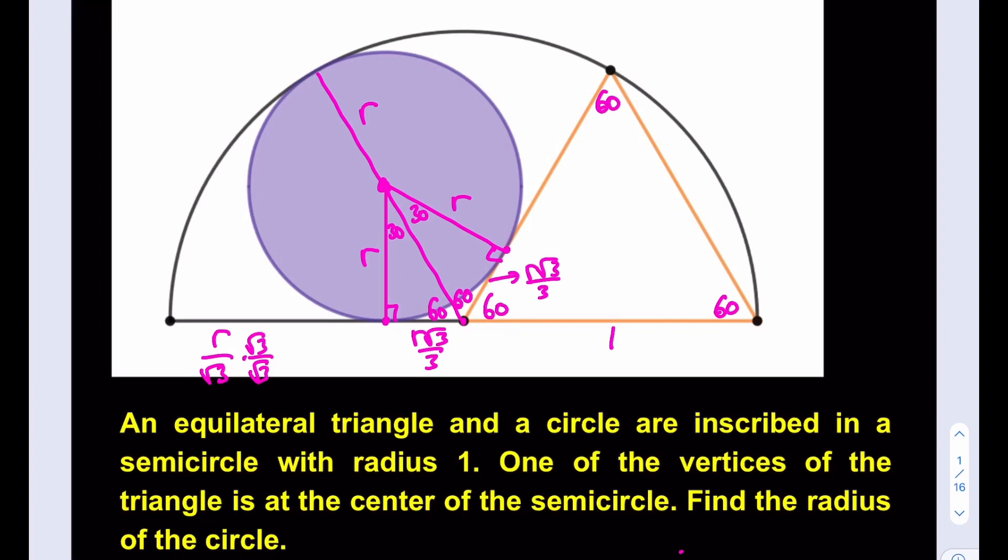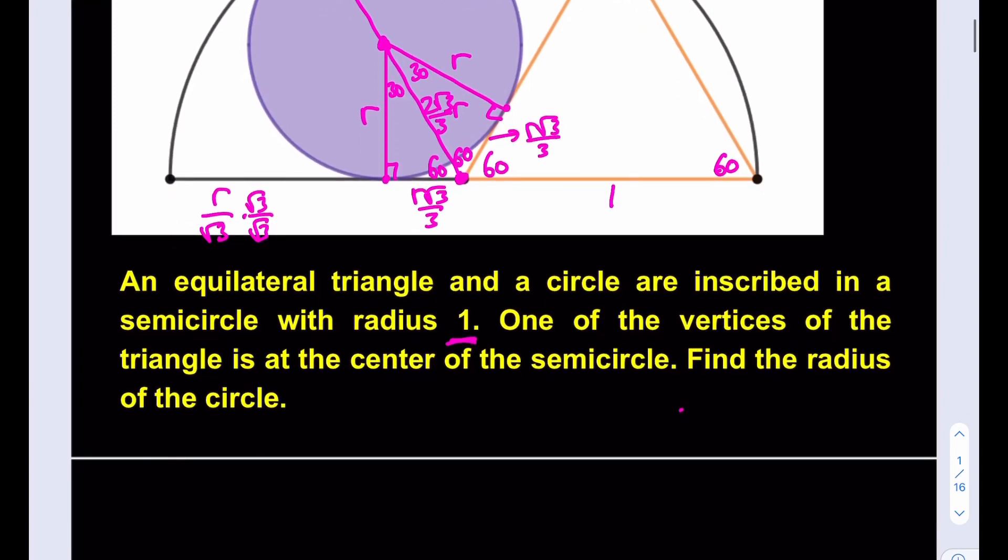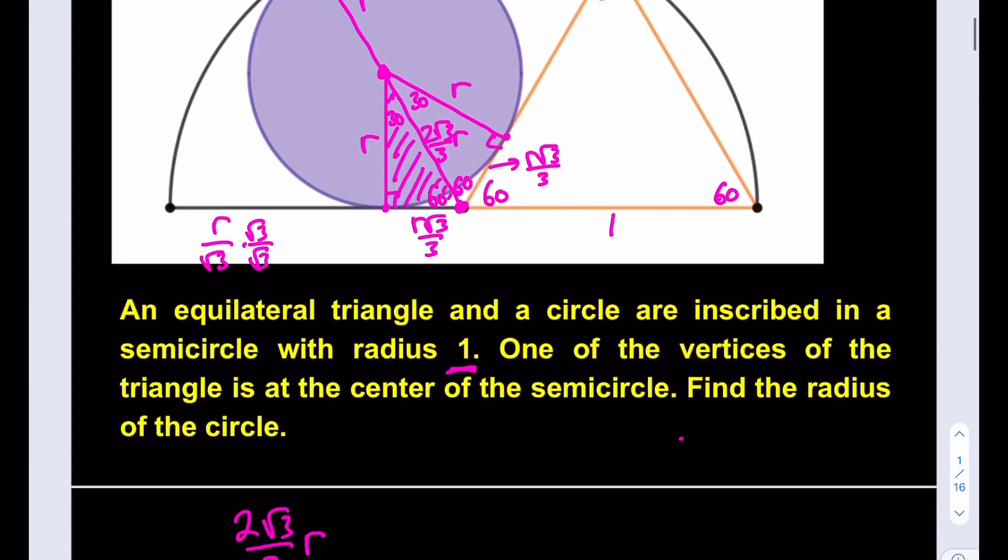If the shorter leg is R root 3 over 3, then the hypotenuse is going to be twice that. So hypotenuse will be 2 root 3 over 3 multiplied by R. But here's something interesting. We know that from this point to that point, it's the radius of the semicircle, which is 1. So if you subtract R, this hypotenuse is going to be 1 minus R at the same time. So 2 root 3 over 3 R, which is the hypotenuse of this triangle, is also equal to 1 minus R.